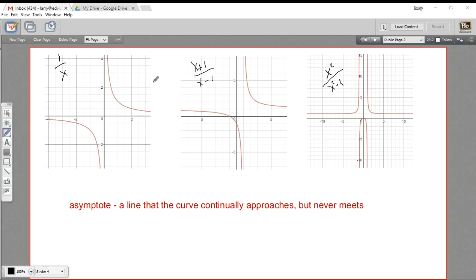What happens when you have an x on the bottom of a fraction is you get some odd-looking graphs, different from the kinds of polynomial functions you might be used to. And the reason is we can't ever have 0 on the bottom of a fraction.